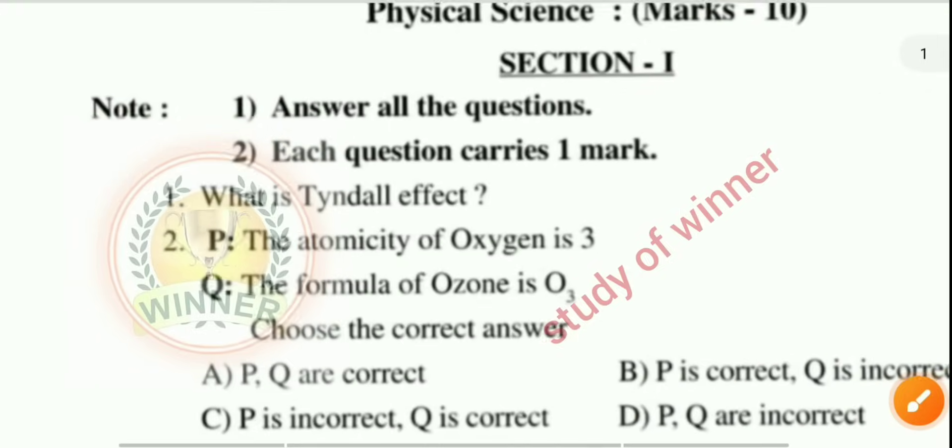The second question: the atomicity of oxygen is 3 and the formula of ozone is O3. The right answer is P is incorrect and Q is correct.